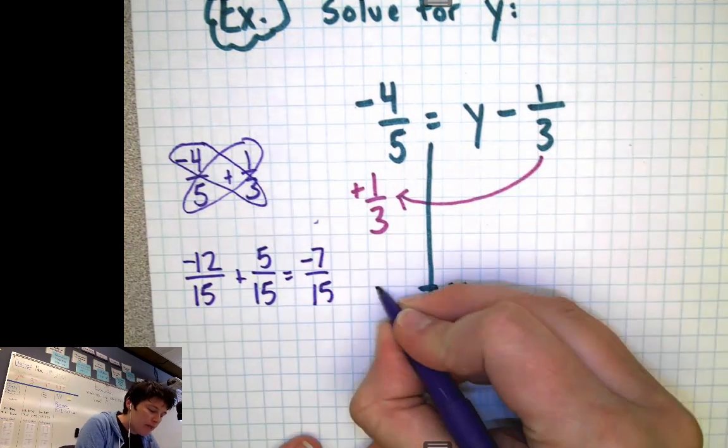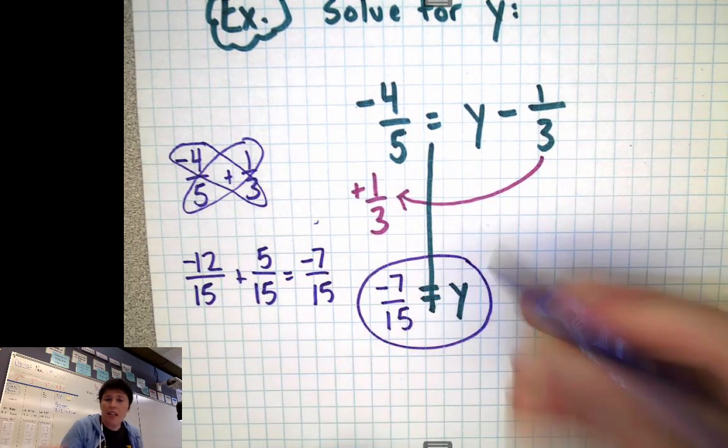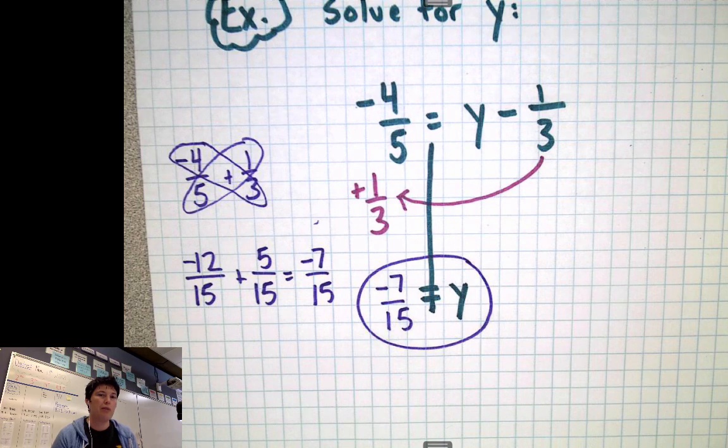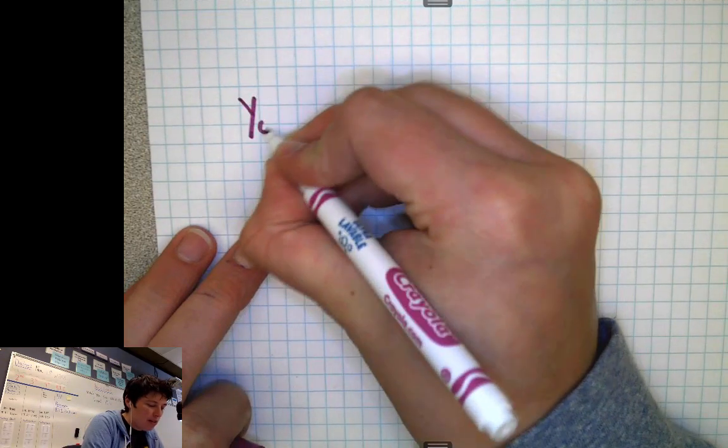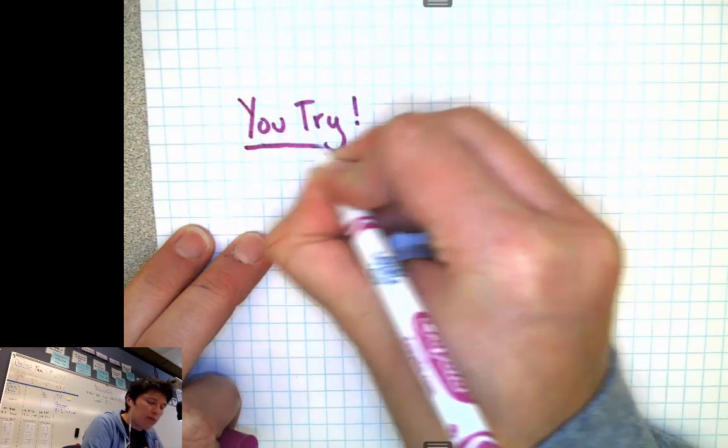So our answer for y is negative 7/15ths. And there it is. And it's simplified. I can't divide 7 and 15 by any number that they have in common. So we've got it down to its lowest value. So why don't you try one? See if you're getting better at these, because I know we've done some in class. This is probably not the first time you've tried some of these fraction problems.